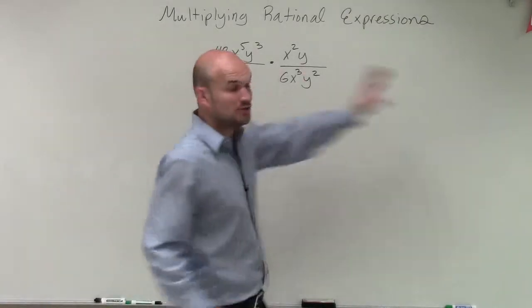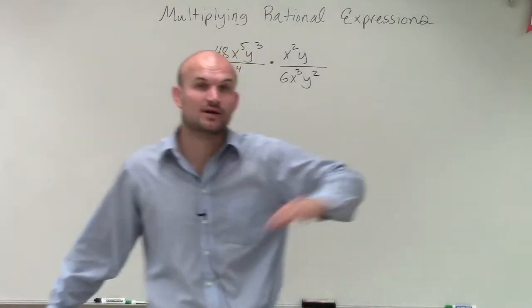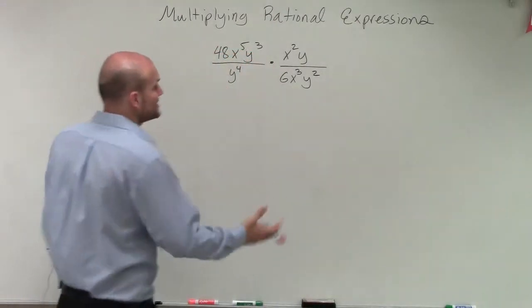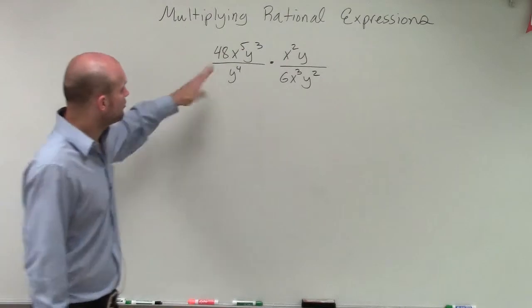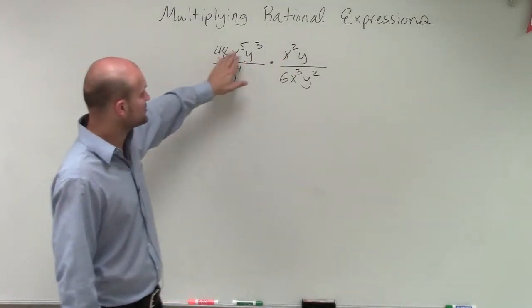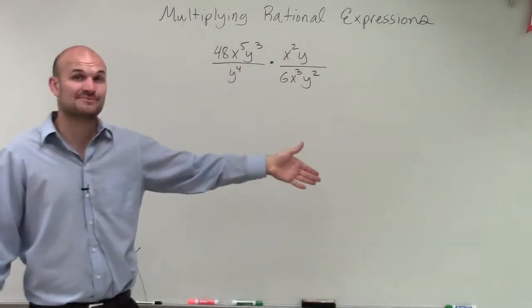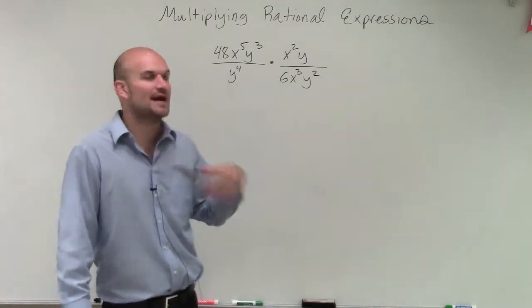When multiplying, we multiply straight across - numerator times numerator, denominator times denominator. Remember the rules of exponents: when multiplying variables with the same base, we add their exponents. When dividing, we subtract the exponents.